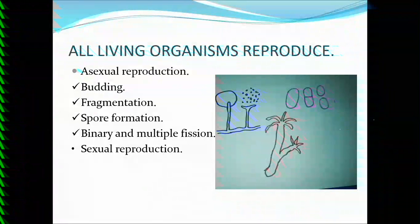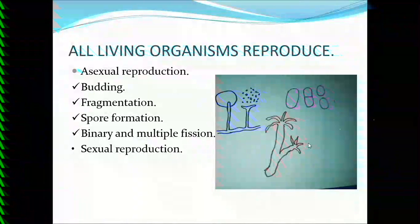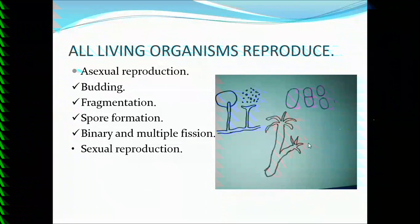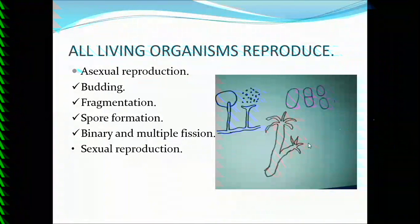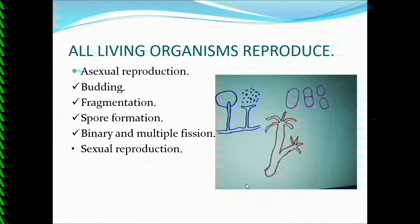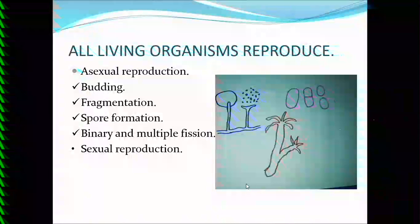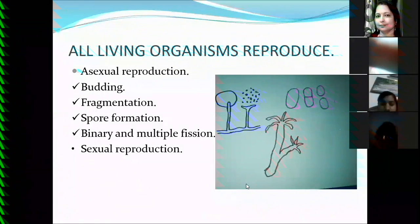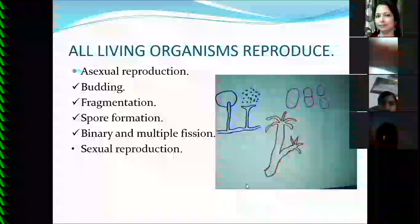Spores are formed in specific sac-like structures called sporangia. When sporangia rupture, spores are released and germinate to form new organisms. Binary fission and multiple fission are also examples of asexual reproduction. Sexual reproduction generally involves two parents, and gametes are formed. When gametes fuse, there is mixing of paternal and maternal characters, so sexual reproduction gives rise to variations and helps more in evolution.